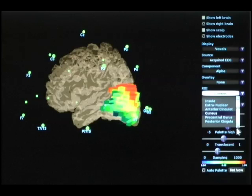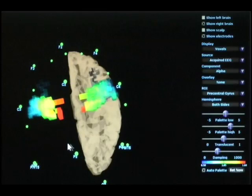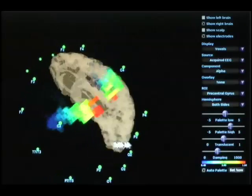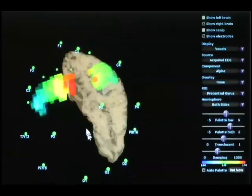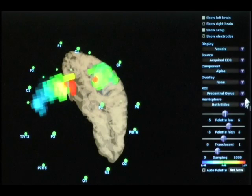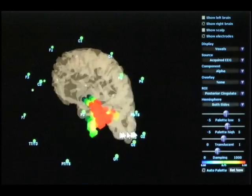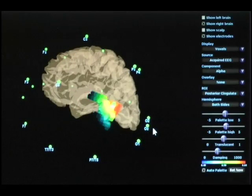And posterior cingulate. Again, a very important region, confirming that the alpha activity we were seeing is predominantly parietal. Here's the posterior cingulate and its involvement in that activity.